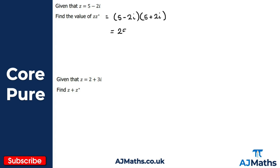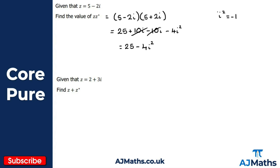Expanding using FOIL: five times five gives 25; five times two i gives 10i; minus two i times five gives minus 10i; minus two i times positive two i gives minus four i squared. The 10i and minus 10i cancel, leaving 25 minus four i squared. Since i squared equals minus one, that gives 25 plus four equals 29.